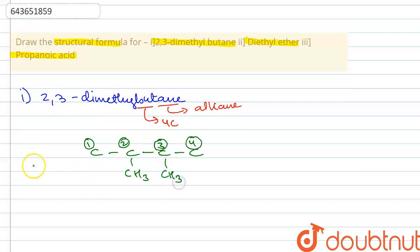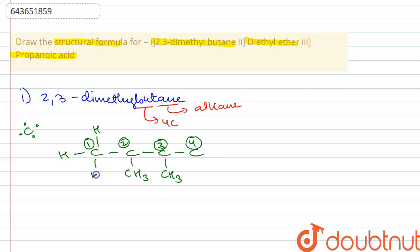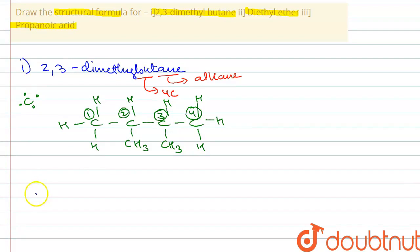We will attach the methyl group at the second and third positions. As you know, a carbon atom has four electrons in its outermost shell and all four need to be involved in bond formation. So the remaining electrons will be involved in bond formation with hydrogen — and this is the structure of 2,3-dimethylbutane.